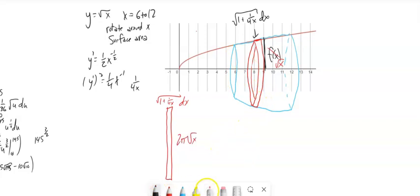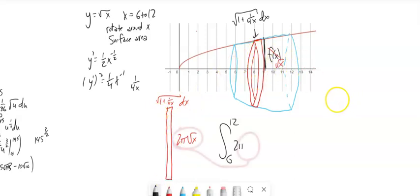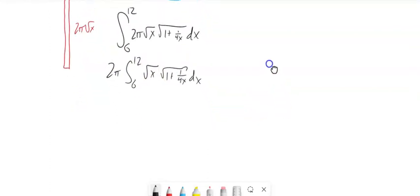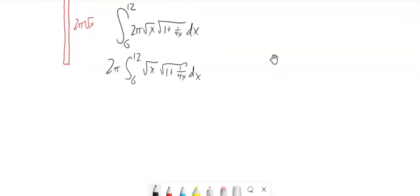So I can set up my integral. And I'm just doing surface area. So it's length times width. It's running from 6 to 12. Well, I'm going to pull this 2π out because it's just a constant. And I'm going to do a little algebra manipulation. These are both square rooted. So I can multiply them together under the square root.